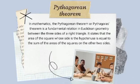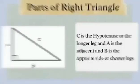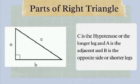It states the area of the square whose side is the hypotenuse is equal to the sum of the areas of the squares on the other two sides. A right triangle is one in which two sides are perpendicular. The relation between the sides and angles of a right triangle is the basis for trigonometry. C is the hypotenuse or the longer leg, A is the adjacent, and B is the opposite side or shorter leg.